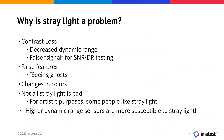Why is stray light a problem? First, contrast loss due to veiling glare. Stray light will effectively decrease the dynamic range of your camera — it could be the bottleneck limiting factor. It can also produce a false signal for dynamic range testing or SNR testing, effectively increasing the measurement and giving you an overestimation of dynamic range. It leads to false features in the scene — you'll literally see objects that aren't there, such as ghosts — and changes in colors, which can be undesirable.